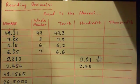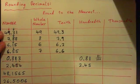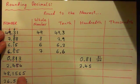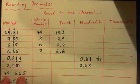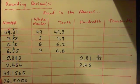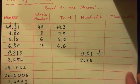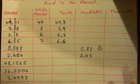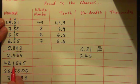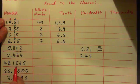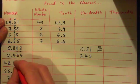Alrighty, so what should we do now? How about we just get this guy to the nearest hundredth? Can you round this guy to the nearest hundredth? 48.1565. Okay, so where is the hundredth digit on this anyway? So we've got tens, ones, tenths, hundredths, thousandths, ten thousandths. So tenths, hundredths — the hundredths digit is this five here.